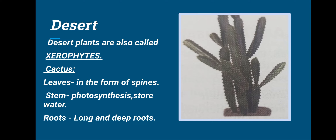The spines help to reduce the loss of water and survive in the desert. Photosynthesis in the cactus plant is carried out by the green fleshy stem, and water is also stored in these stems. They have long roots to absorb water from deep inside the ground.